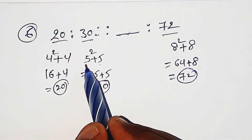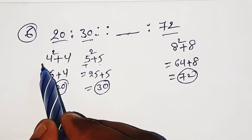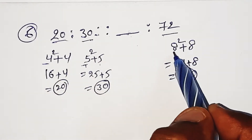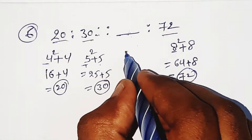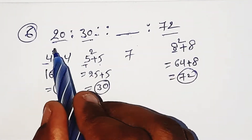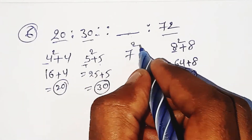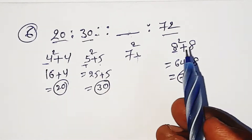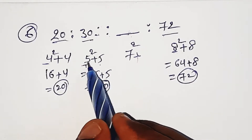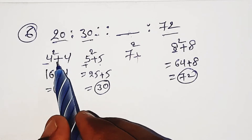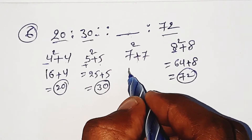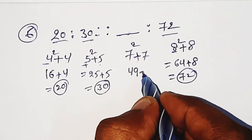Here we have 5, 4, 4, 8. So the next number follows 7 squared plus 7, like the pattern n squared plus n. 7 squared is 49, plus 7 is 56. 56 is the missing number.